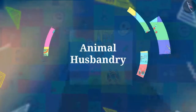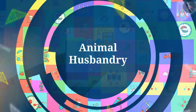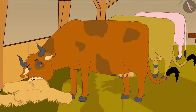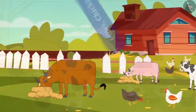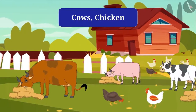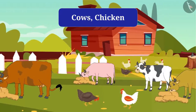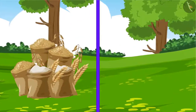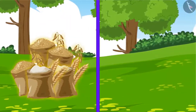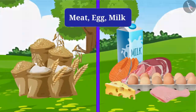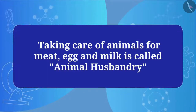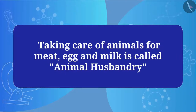Welcome all of you to this video. We studied about how to improve crops — now let's study about animal husbandry. You must have seen cattle farms or chicken farms at various places, where animals like cows and chickens are kept at one place and taken care of. Apart from increasing crop production, we should also take care of animals so that we can get maximum food from them. Taking care of animals for meat, egg, and milk is called animal husbandry.